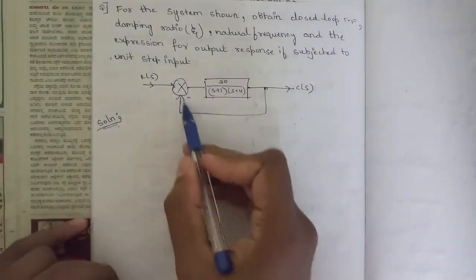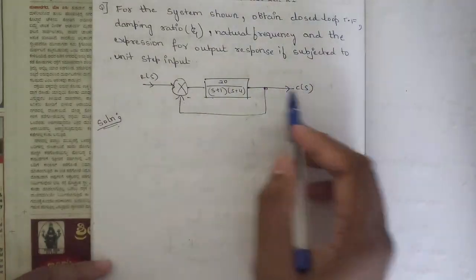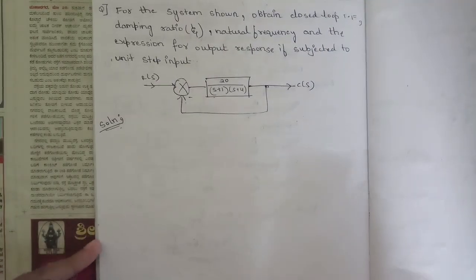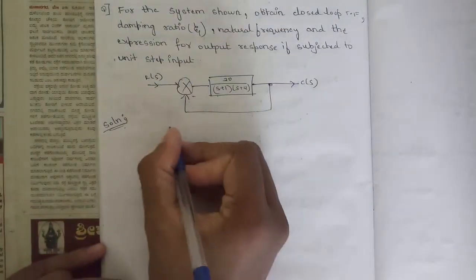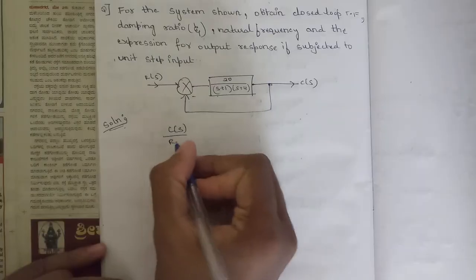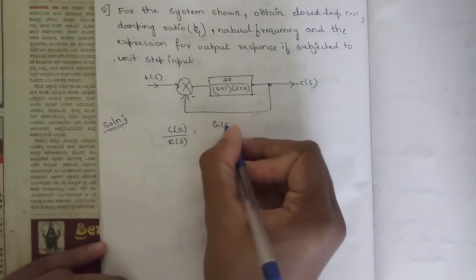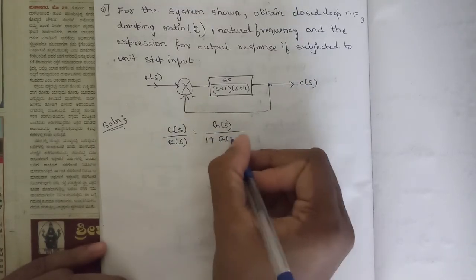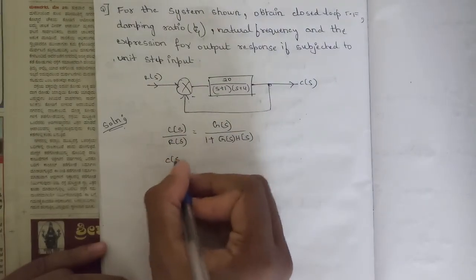There is one simple block diagram with one unity feedback path and one gain path. We need to first find the transfer function c(s)/r(s). In general we have the formula G(s) divided by 1 plus G(s)·H(s). So let's find c(s)/r(s).